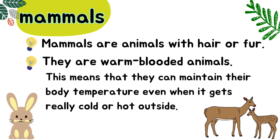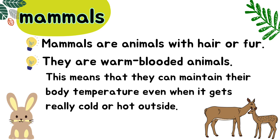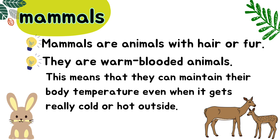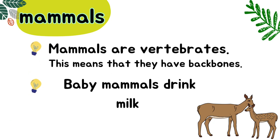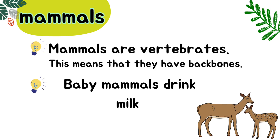Mammals are animals with hair or fur. They are warm-blooded animals. This means that they can maintain their body temperature even when it gets really cold or hot outside. Mammals are vertebrates, which means that they have backbones. Baby mammals drink milk from their mothers.